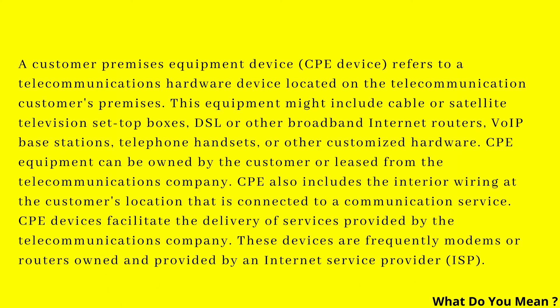The Customer Premises Equipment (CPE) device refers to a telecommunications hardware device located on the telecommunication customer's premises. This equipment might include cable or satellite television set-top boxes, DSL or other broadband internet routers, VoIP base stations, telephone handsets, or other customized hardware. CPE equipment can be owned by the customer or leased from the telecommunications company.